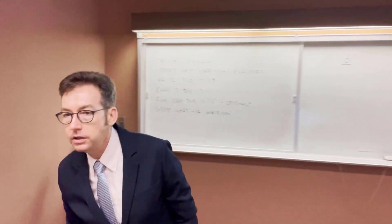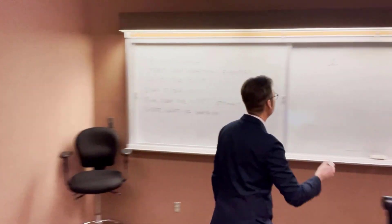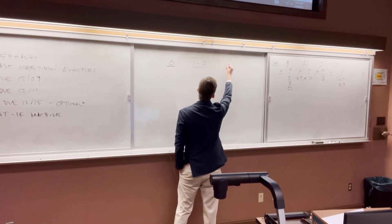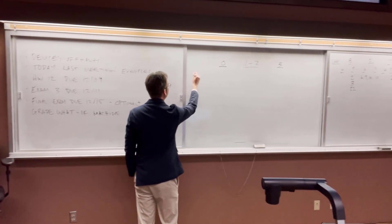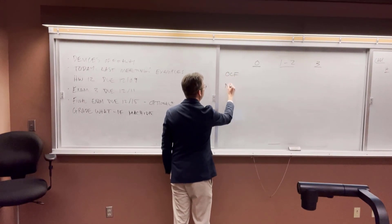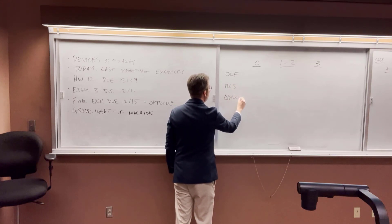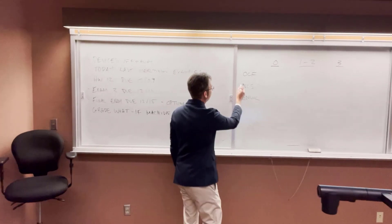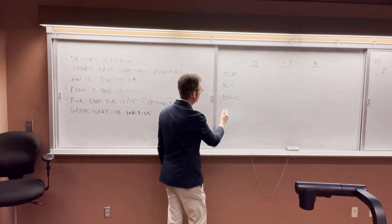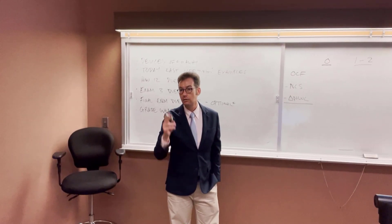What about years one and two — are they any different? No, so we're going to save ourselves time and just have one column for years one and two, then a separate column for year three. For each of these, we want the operating cash flow, the net capital spending, and the change in net working capital. We calculate: operating cash flow minus net capital spending minus the change in net working capital — and that gives us cash flow.